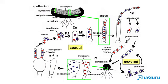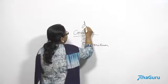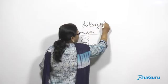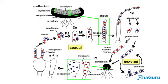The nuclei do not unite — only plasmogamy has happened; karyogamy has not. The nuclei from the antheridium (red) and ascogonium (blue) coexist in the ascogonium, which then starts producing hyphae. Each hypha now has two nuclei — one from the ascogonium and one from the antheridium. Cross walls form, and this mycelium is known as dikaryotic mycelium, meaning it has two nuclei.